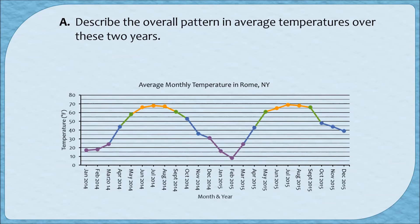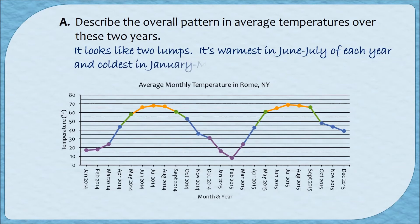First, describe the overall pattern in the average temperatures over these two years. A common response is to say these values are bimodal, but you have to be careful because this distribution isn't quite bimodal — the vertical axis is not a frequency, so we're not looking at frequently occurring values. Instead, you could describe the pattern as cyclical: it starts cold in January, gets warmer through the summer months of June to September, then gets colder again around January to March, and then warm again. It looks like two lumps — warmest in June to July of each year and coldest in January to March.